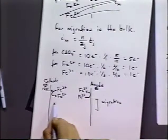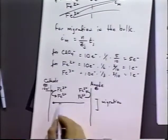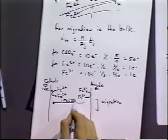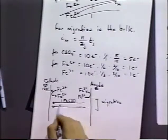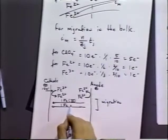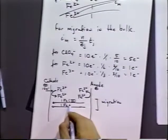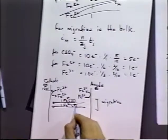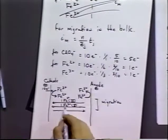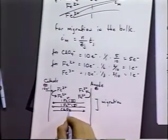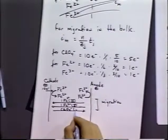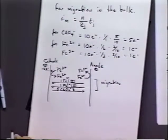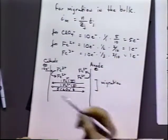And in order to carry that current of ten electrons, we're going to be moving one by the iron three plus, one electron by the iron two plus. And we're going to be moving the ratio of perchlorate, we're going to be having five perchlorate ions moving in that particular direction.